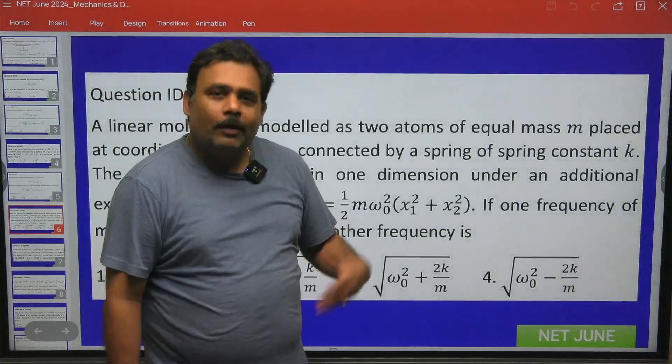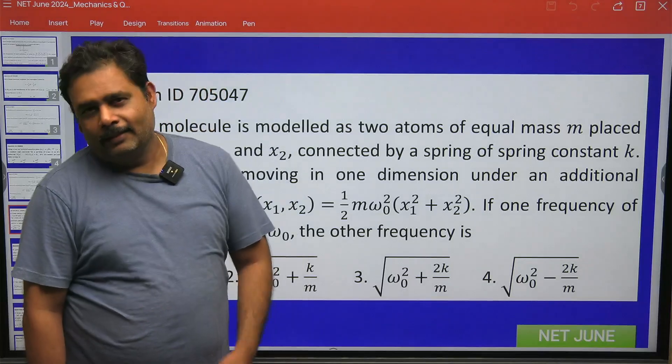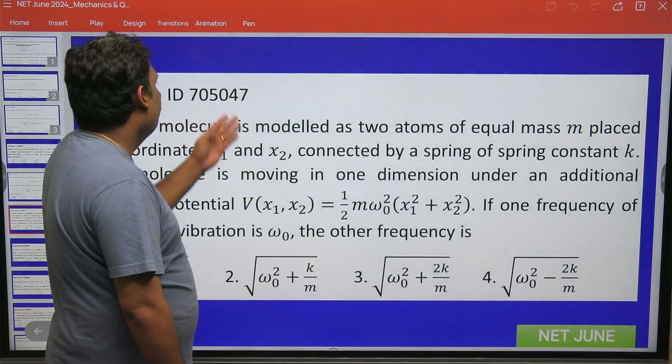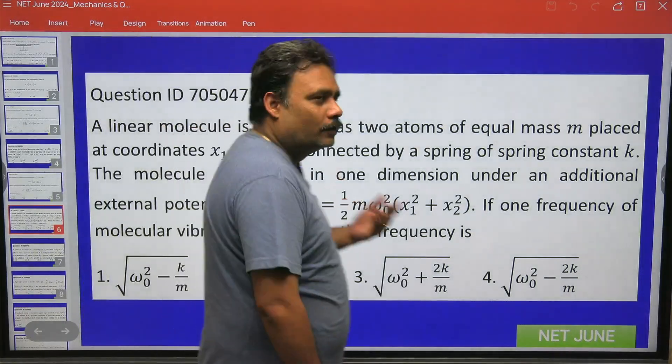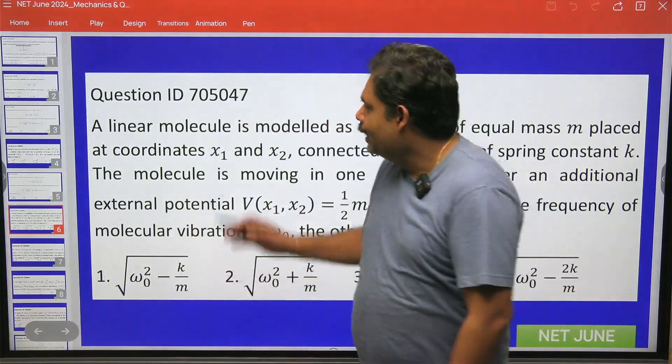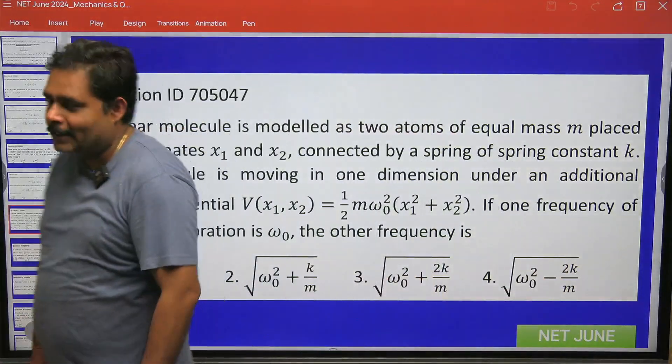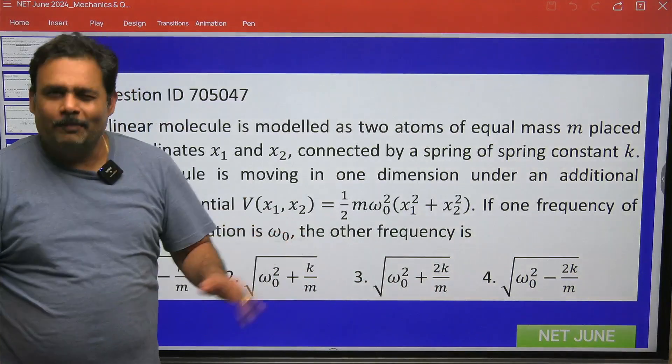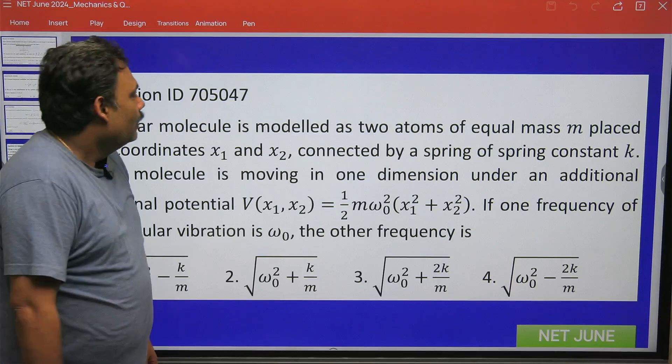Hello students. Let us solve one more question from CSIR NET June examination. This is question number 705047, a 5-mark question. This is a very nice question. In this question, you can give the answer without solving it, but we will solve it completely.